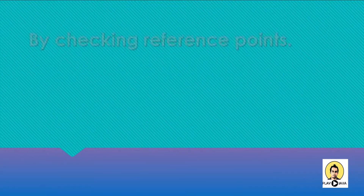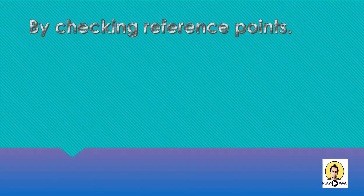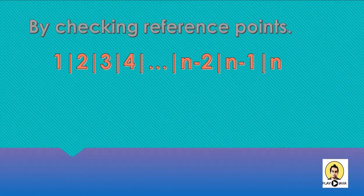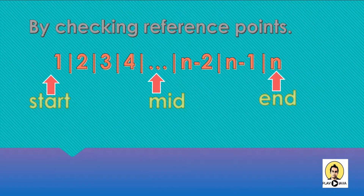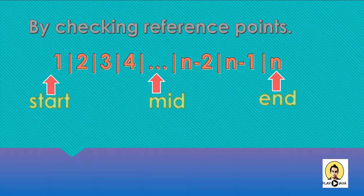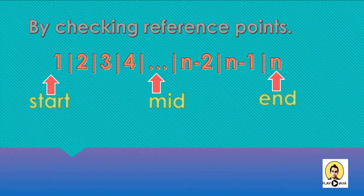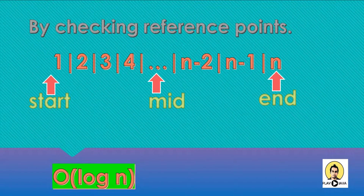The third method I am going to tell you is by checking a reference point. By reference point, I mean suppose the number given is n. You will start with 1 and end with n. The reference point you will take is the start, from 1, and for the end you will take that number itself — suppose 25 is given, end will be 25. The reference point you take will be the middle point, that is start plus end divided by 2. Using this method, you will achieve a time complexity of O(log n).